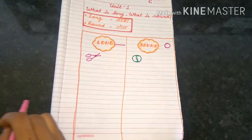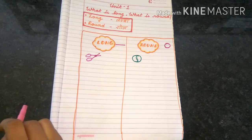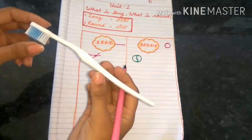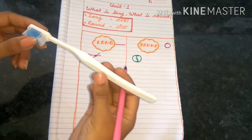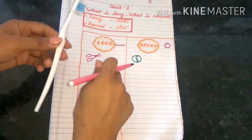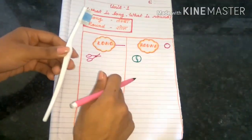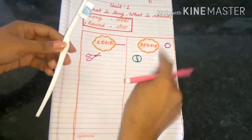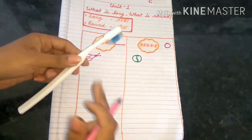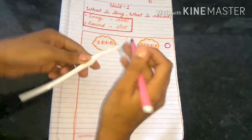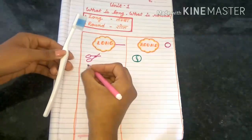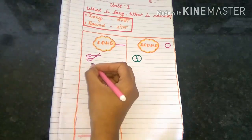Next object that I have is this. This is a toothbrush. So how is it looking? Is it looking long or round? Yes, it is looking long. So let's draw this.